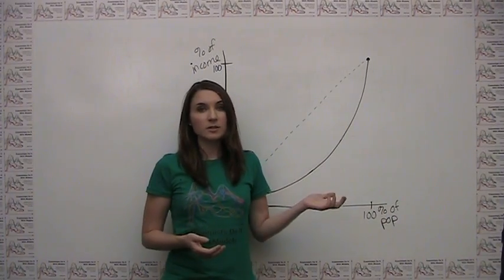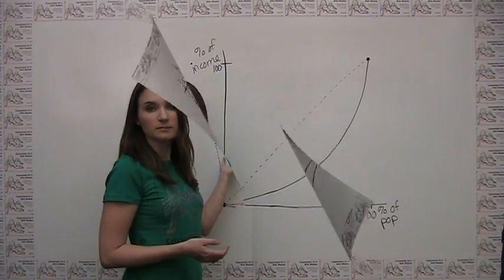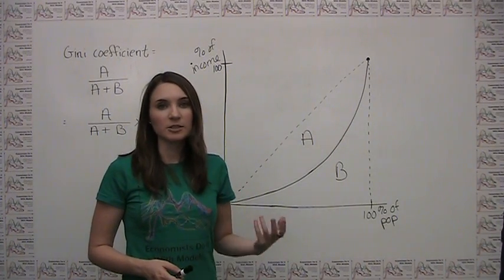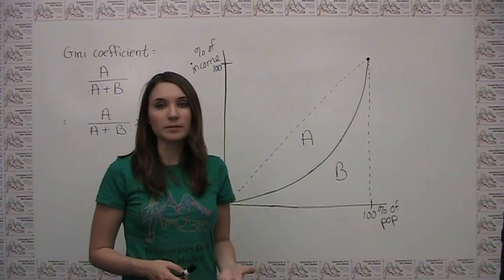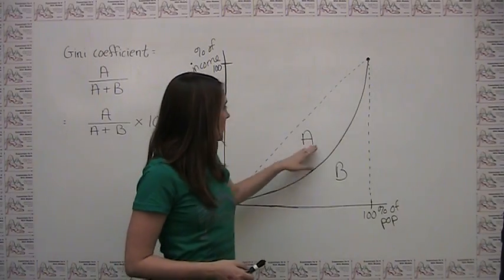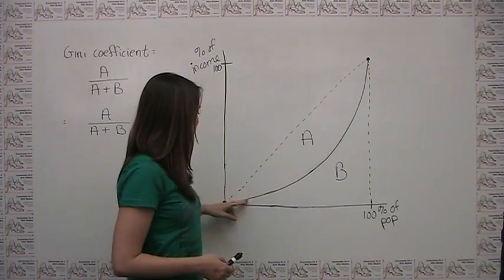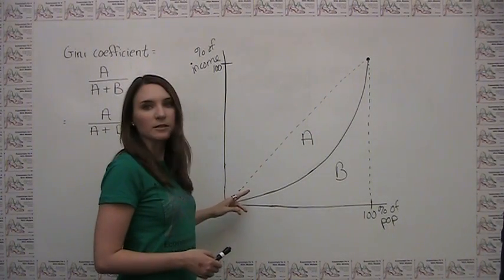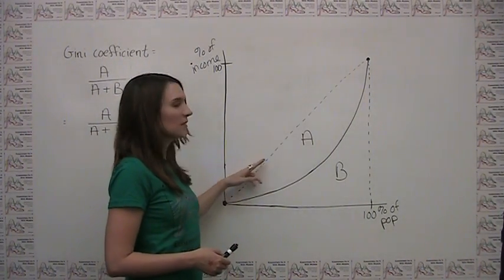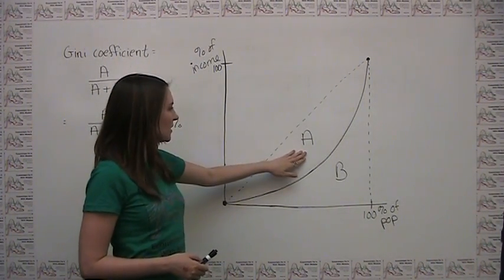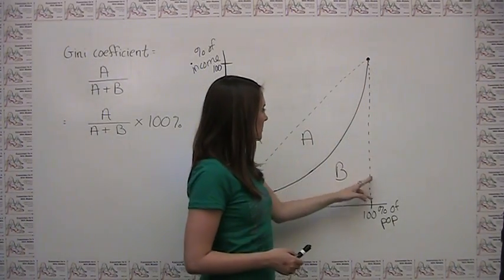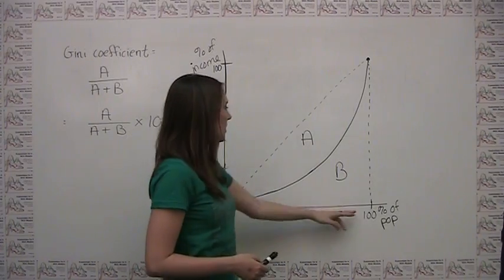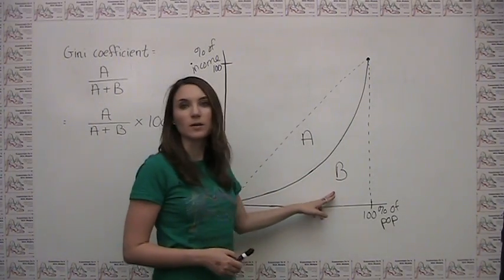A hypothetical Lorenz curve is given here. Once the Lorenz curve is constructed, calculating the Gini coefficient is pretty straightforward. You'll notice here that we've labeled the area between the Lorenz curve and the 45-degree diagonal — which represents perfect income equality — as A, and we've labeled everything else below the Lorenz curve but still within the triangle as area B.